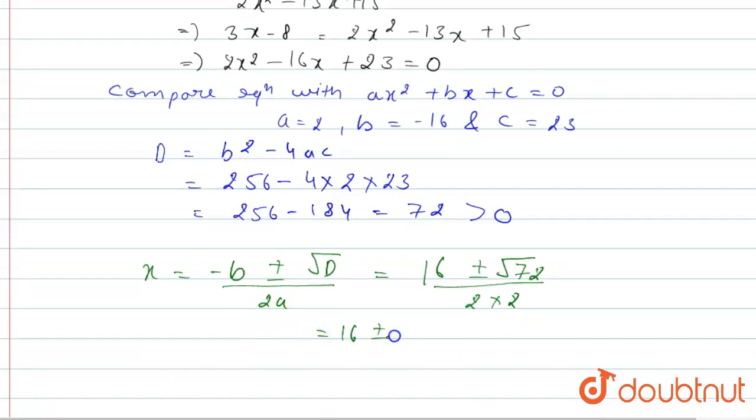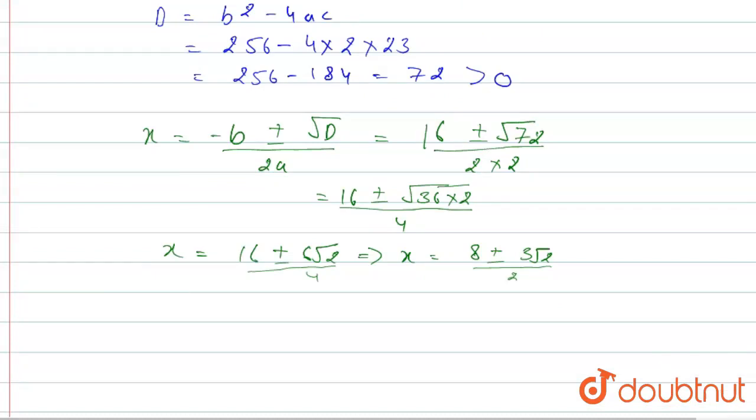This becomes 16 plus minus root 36 multiply with 2 upon 4. Root 36 is 6, so 6 root 2 upon 4. From here we can write 8 plus minus 3 root 2 upon 2. So the two roots are x equals 8 plus 3 root 2 upon 2 and x equals 8 minus 3 root 2 upon 2.